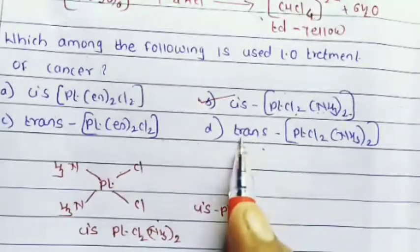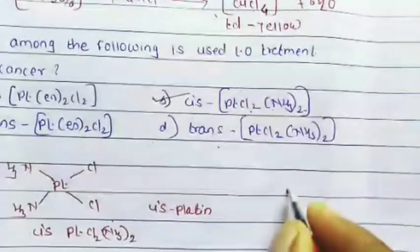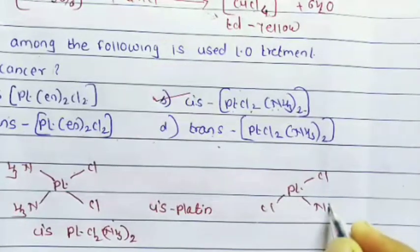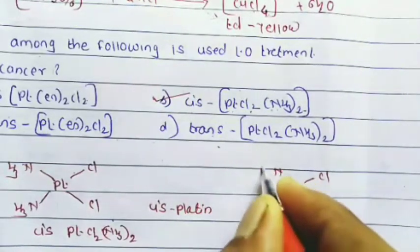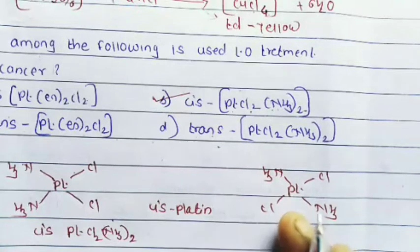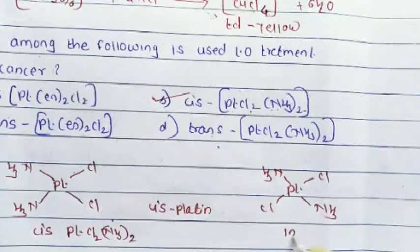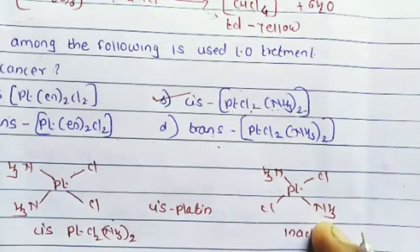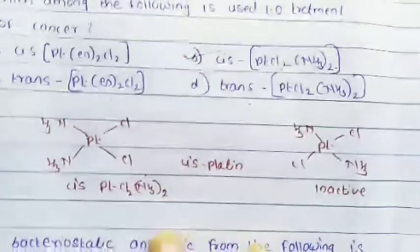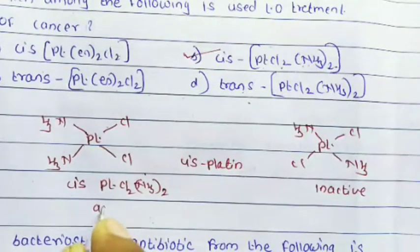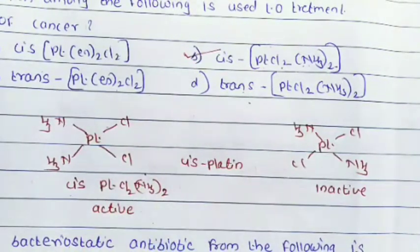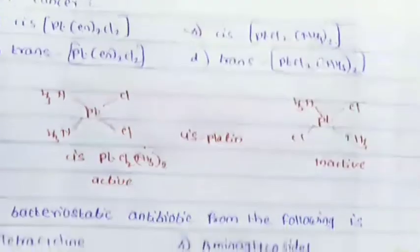In the trans form, the Cl atoms are opposite to each other and the NH₃ groups are opposite to each other — this is transplatin. Transplatin is an inactive compound and is not used for cancer treatment. Cisplatin is the active complex used for cancer treatment.